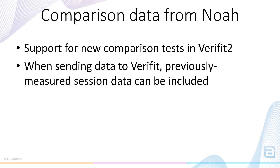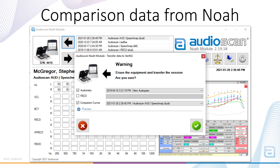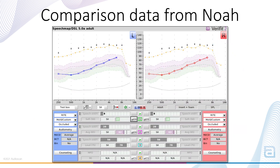The second and arguably most exciting update to the NOAA module relates to the speech map comparison tests feature mentioned earlier. For the first time ever, previously stored speech map measurements can be sent back from NOAA to the Verifit, and will automatically populate the comparison test slots in the Verifit 2 speech map screen. Underneath the audiogram and RECD selector is a third pop-up menu which allows the selection of the previously stored test data. Here's what the speech map screen would look like with a set of comparison curves pulled in from NOAA, as well as the audiogram ready for new tests to be run.